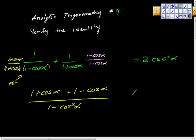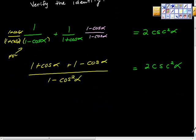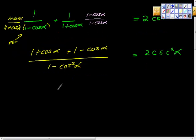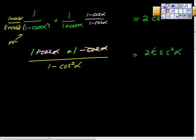Remember, we're continually trying to prove that the left-hand side equals the right-hand side, and we're only changing one side. In the numerator, we have positive cosine alpha and negative cosine alpha, which cancel to zero. We have one and positive one, which gives us two. So we have two over one minus cosine squared alpha.